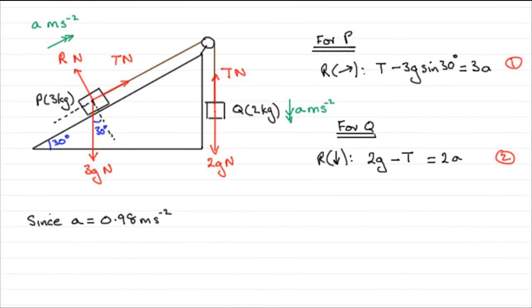Now from the previous part we found out that the acceleration a was 0.98 meters per second squared, and to get t, the tension in the string here, all we need to do is substitute this into either equation 1 or 2.